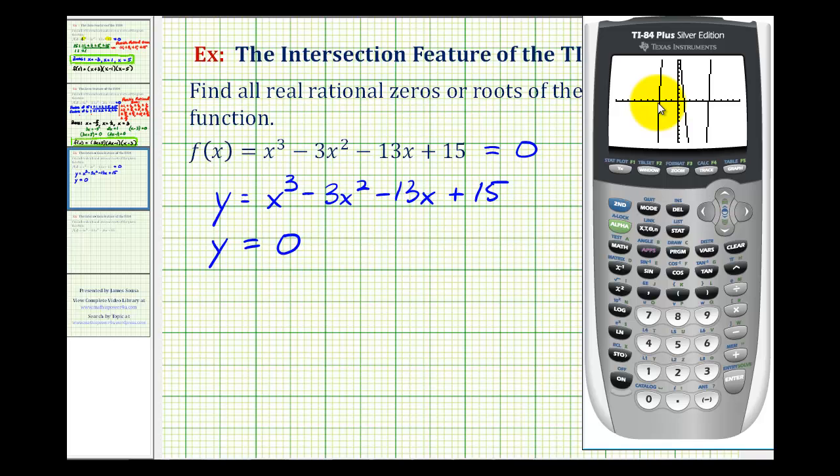And now to find the x-intercepts or which x values make the function equal to zero, we can press second trace and then use option five. Now the reason this is helpful is if we press five, we don't have to deal with the left bound, right bound issue that we do when using the zero feature.